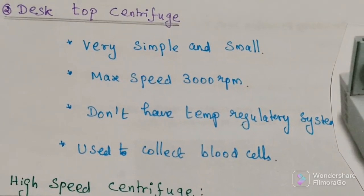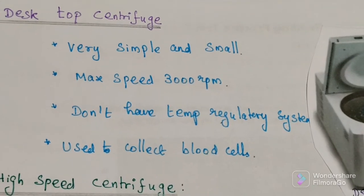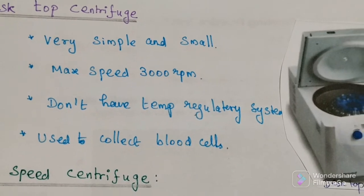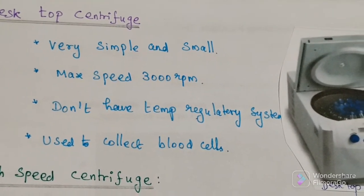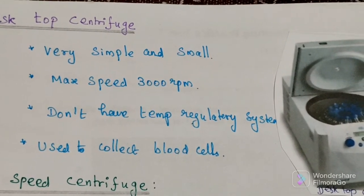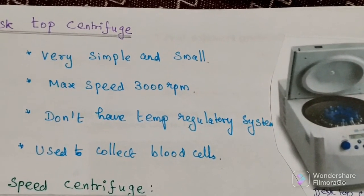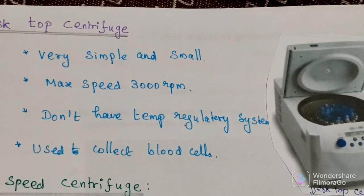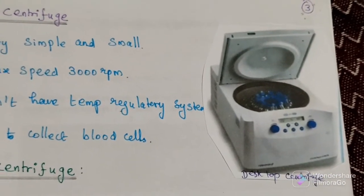Another example of a small bench centrifuge is the desktop centrifuge. It is a very simple and small centrifuge with a maximum speed of around 3,000 RPM. This one does not have any temperature regulatory system. It is used in small laboratories, normally to collect rapidly sedimenting substances such as blood cells.